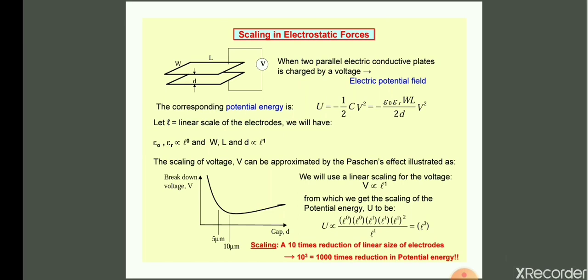To find the scaling of potential energy, we take the equation U = −(ε₀·εᵣ·W·L)/(2D) × V² and relate U to L. Since W·L/D scales as L¹·L¹/L¹ = L¹, and V² scales as L², combining gives U ∝ L³.